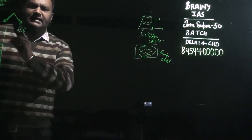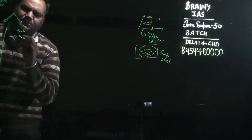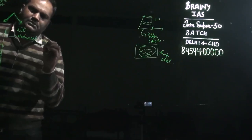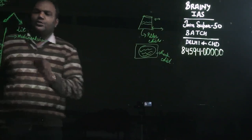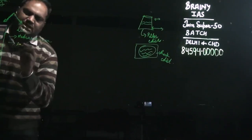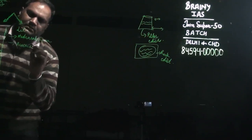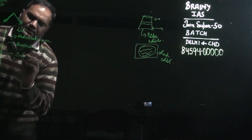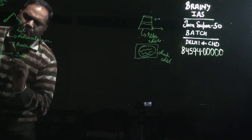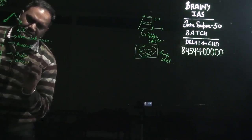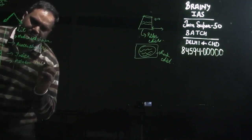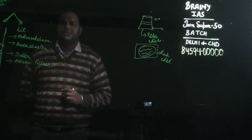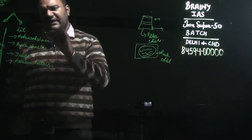Coming to the literary sources of the Mauryan age, we can categorize these literary sources into four parts: first is Mudrarakshasa; second is Arthashastra; third is Indica; and fourth are the Ashokan pillars again, which also serve as a literary source due to their edicts.